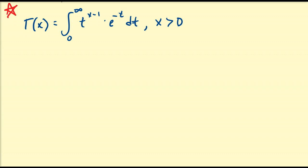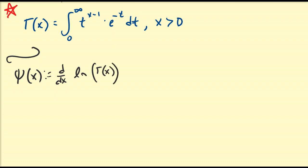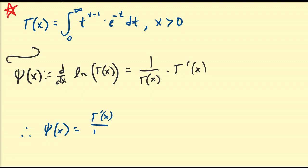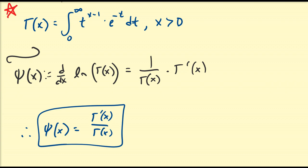To begin, let us define what the digamma function is. The digamma function, which is typically represented by the Greek letter psi, is defined to be equal to the derivative of the natural logarithm of the gamma function — the logarithmic derivative of gamma. By the chain rule, this is equal to 1 divided by the interior function times the derivative of the inside function, which is gamma prime of x. So psi of x is equal to gamma prime of x divided by gamma of x.